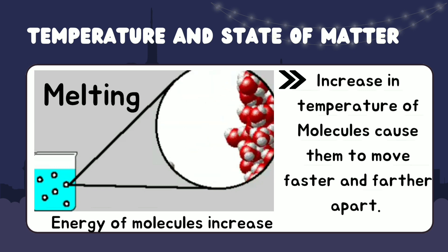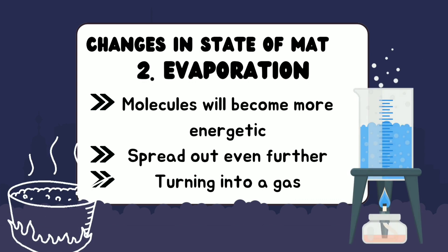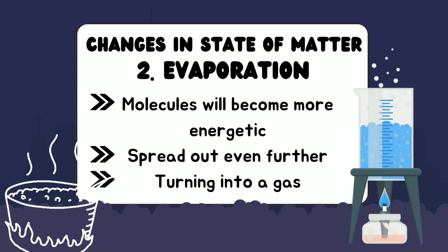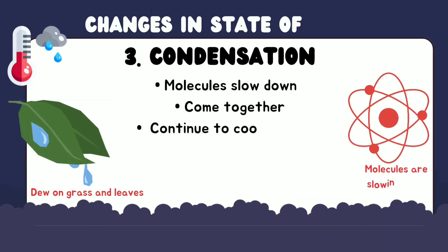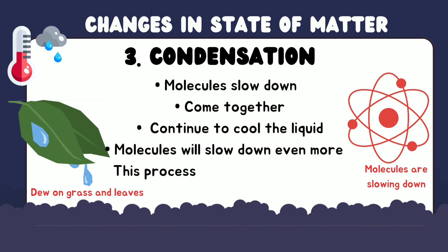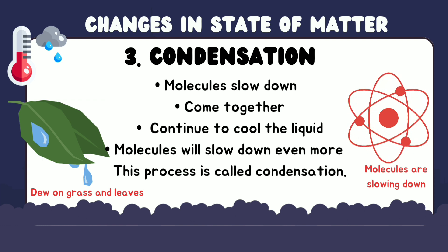And if we keep heating the liquid, its molecules will become even more energetic and spread out even further, eventually turning into a gas. This process is called vaporization or evaporation. On the other hand, when we cool down a gas, its molecules slow down and come together, forming a liquid. If we continue to cool it, the molecules will slow down even more, coming together to form a solid. This process is called condensation.